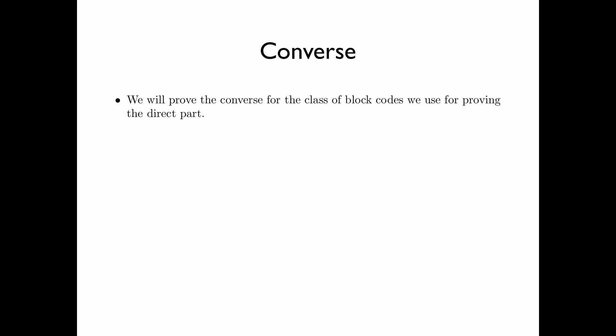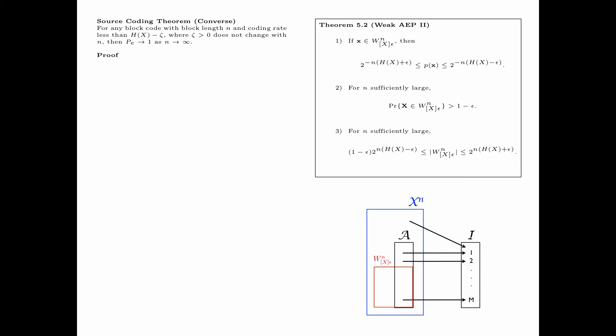For the converse coding theorem, we will prove it for the class of block codes used for proving the direct part. For a general converse, please see problem 2 in the textbook. We now prove the converse part of the source coding theorem. Consider any block code whose rate is less than H(x) minus zeta, that is, (1/n) log m < H(x) - zeta, where zeta > 0 does not change with n. Then the total number of codewords m is less than or equal to 2^(n(H(x) - zeta)).